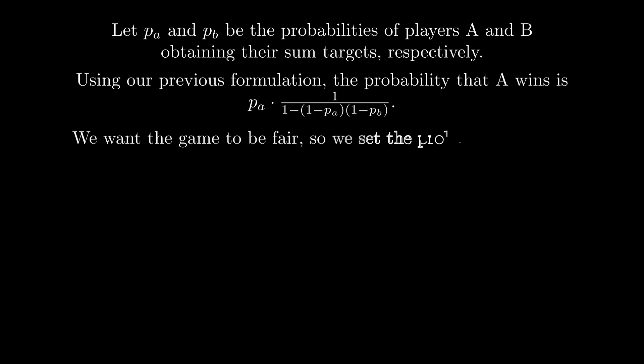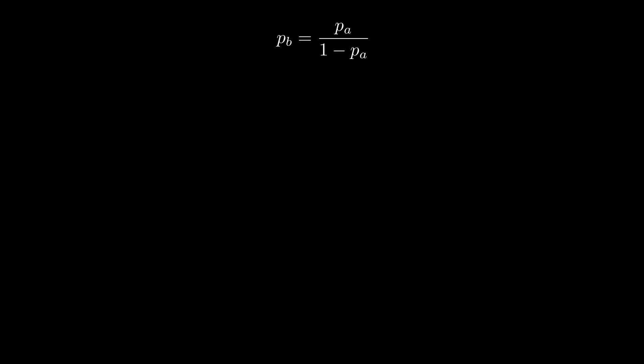As we want the game to be fair, we set the probability to be equal to 1 half. This takes us to the equation PB equals PA over 1 minus PA.